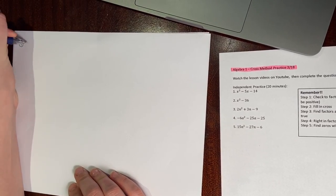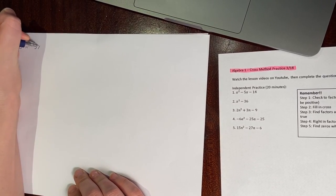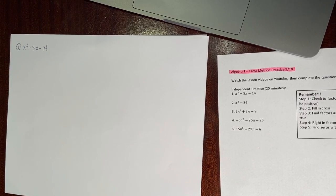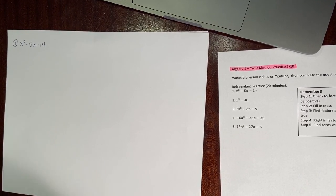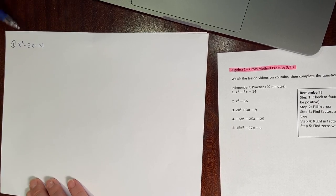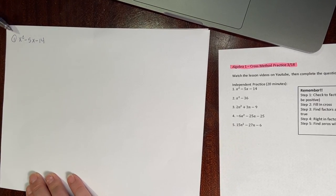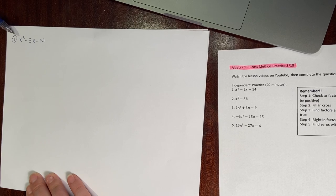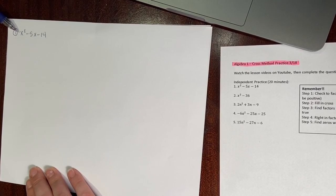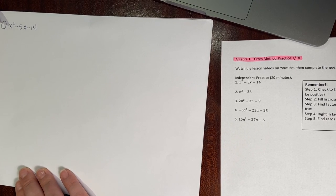The first question we had was x squared minus 5x minus 14. If you've been watching your videos, this should just be a review for you. I'm going to be going over the cross method. Step one, I'm always going to look for the GCF — do these share anything? I have an a value of one, so they don't share anything. There's no GCF for this problem.